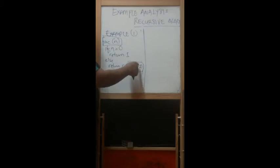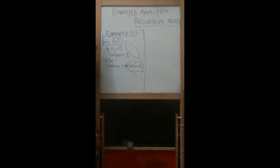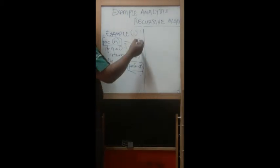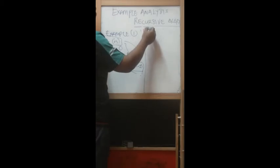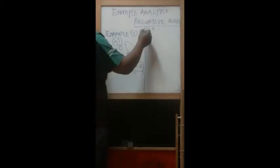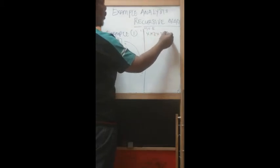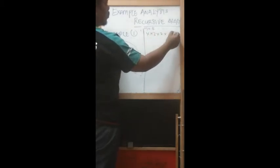We give n, and after that n will be reduced by minus 1. Minus 1, it calls itself. This is actually the process of repetition. Let's say I give the example as we did previously: n equal to 4. That means 4 factorial becomes 4 times 3 times 2 times 1, equal to 24.